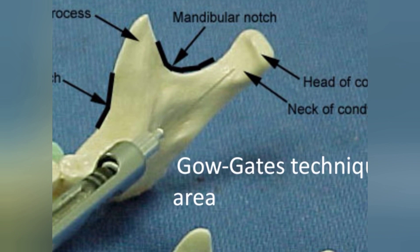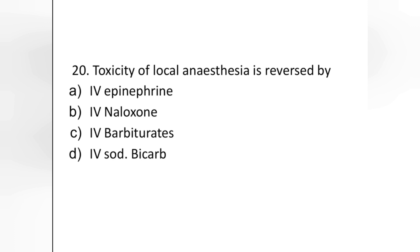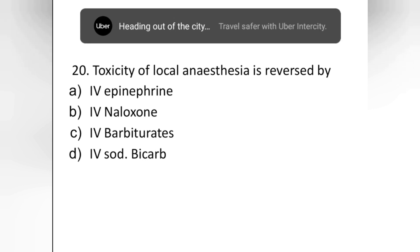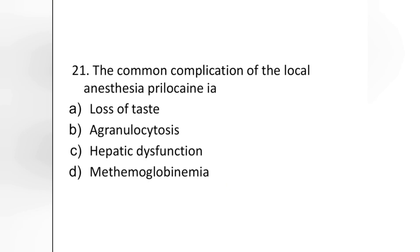Also from a previous video: the neck of the condyle is the target area of Goget's technique of mandibular anesthesia. Next question: the toxicity of local anesthesia is reversed by — option A: IV epinephrine, B: naloxone, C: barbiturates, D: sodium bicarbonate. The answer is IV barbiturates.